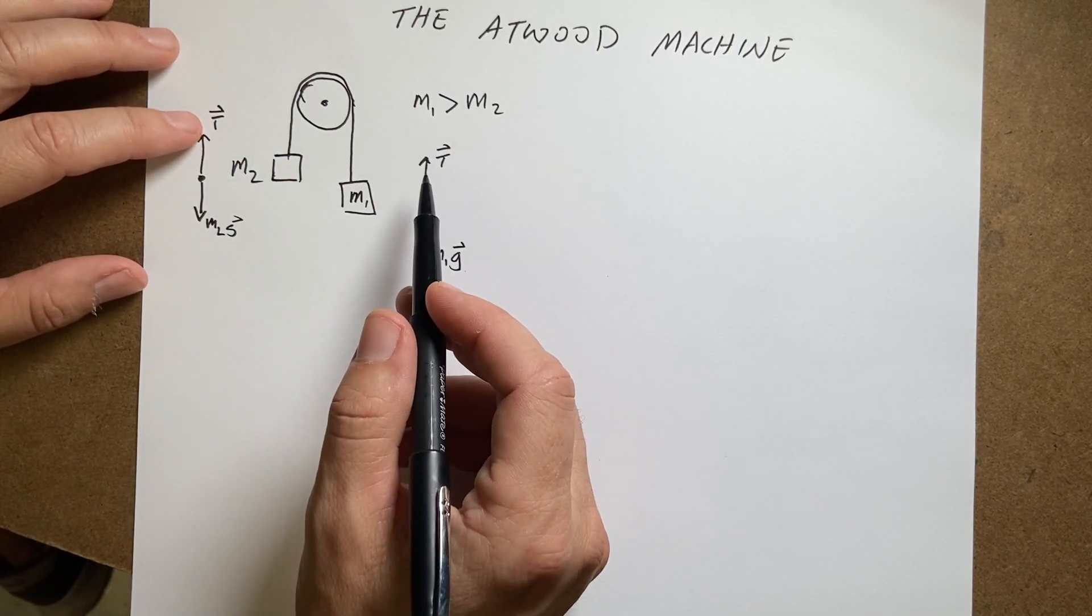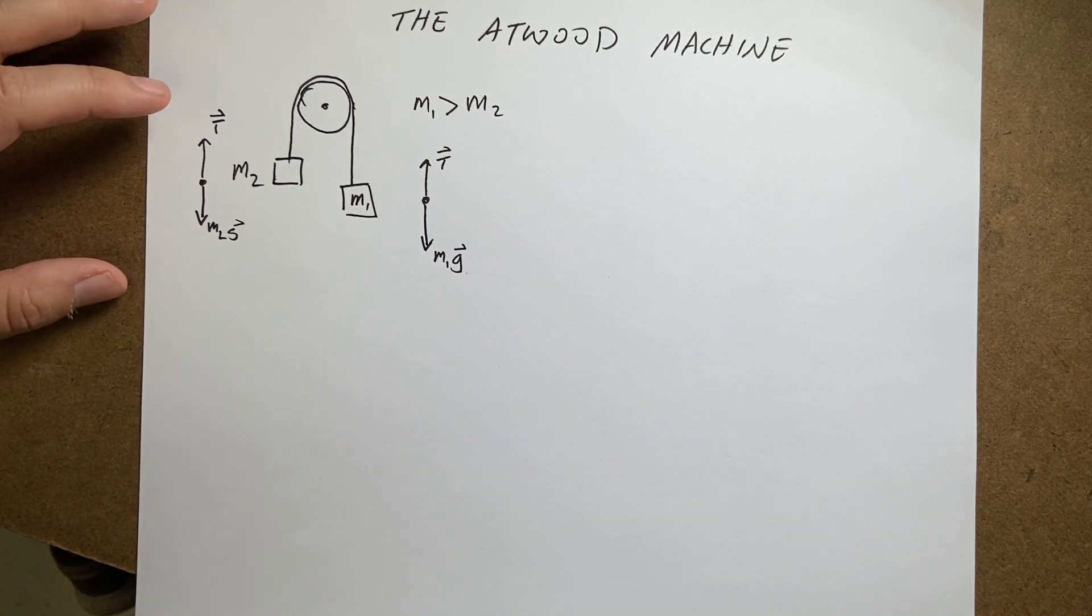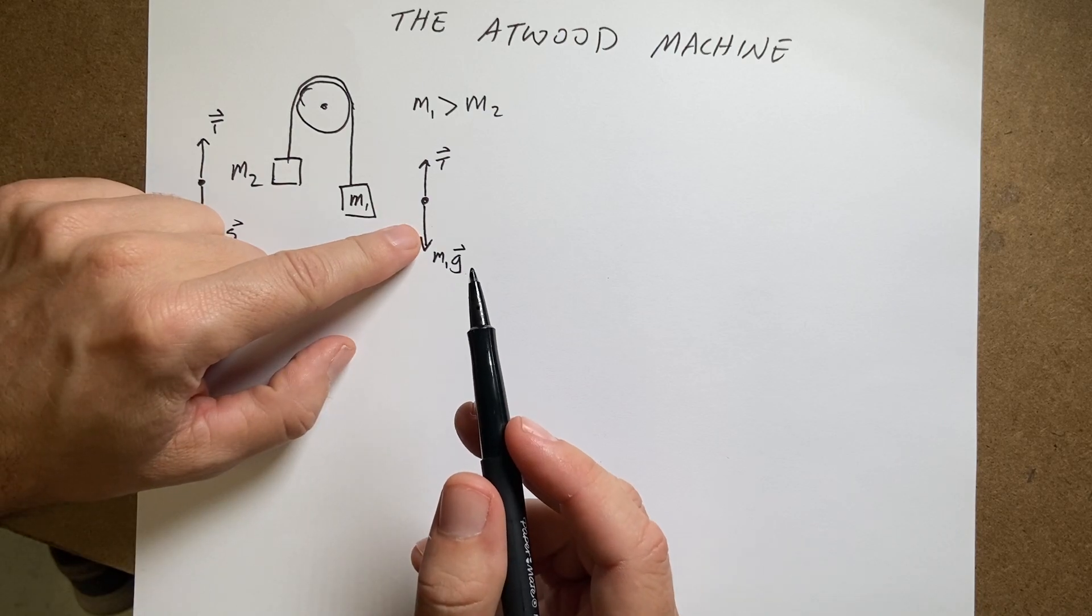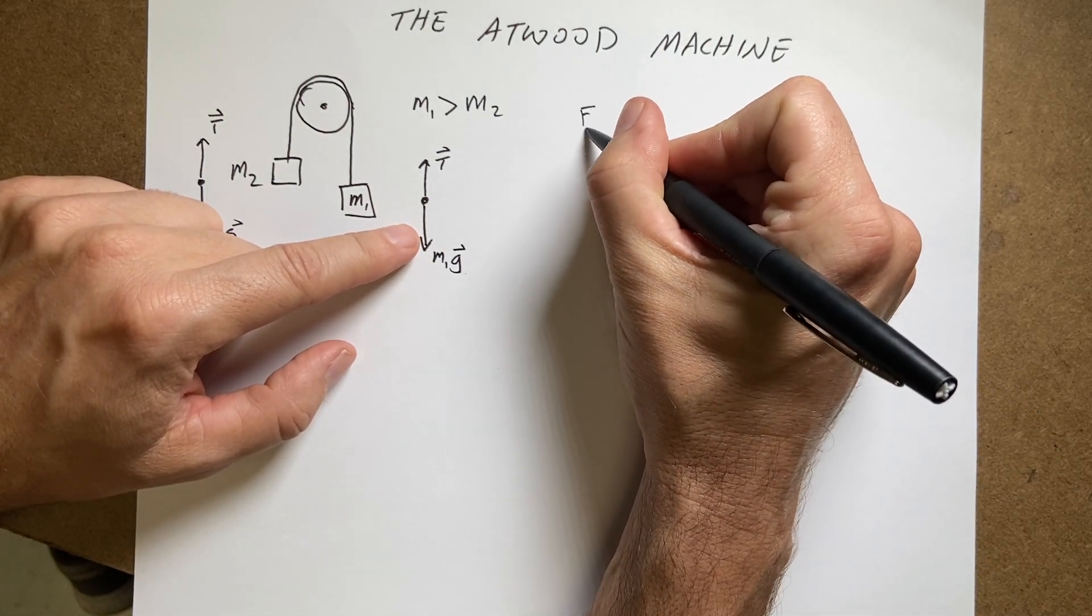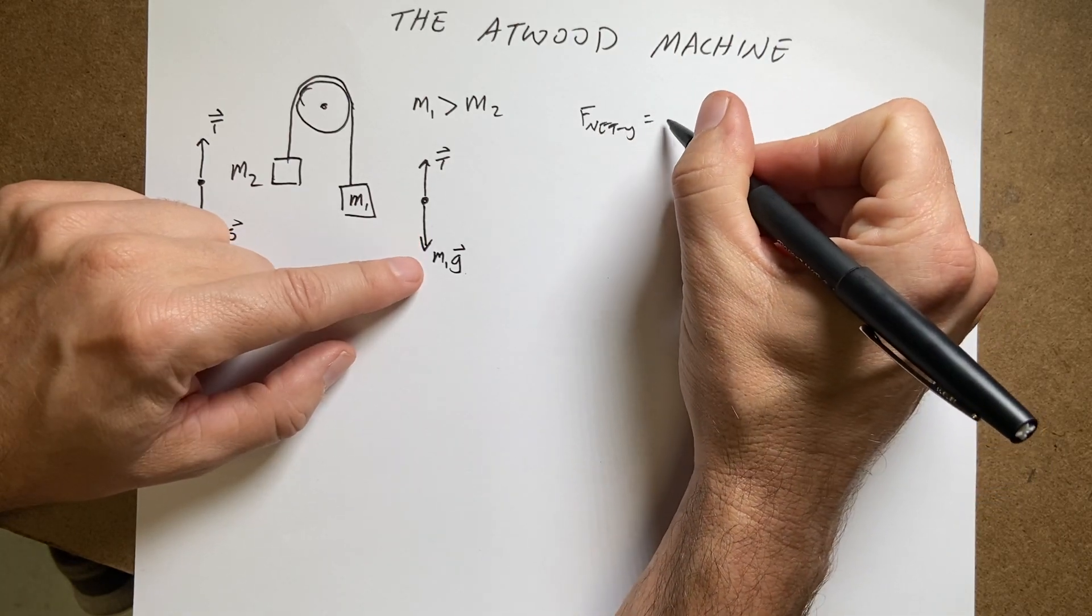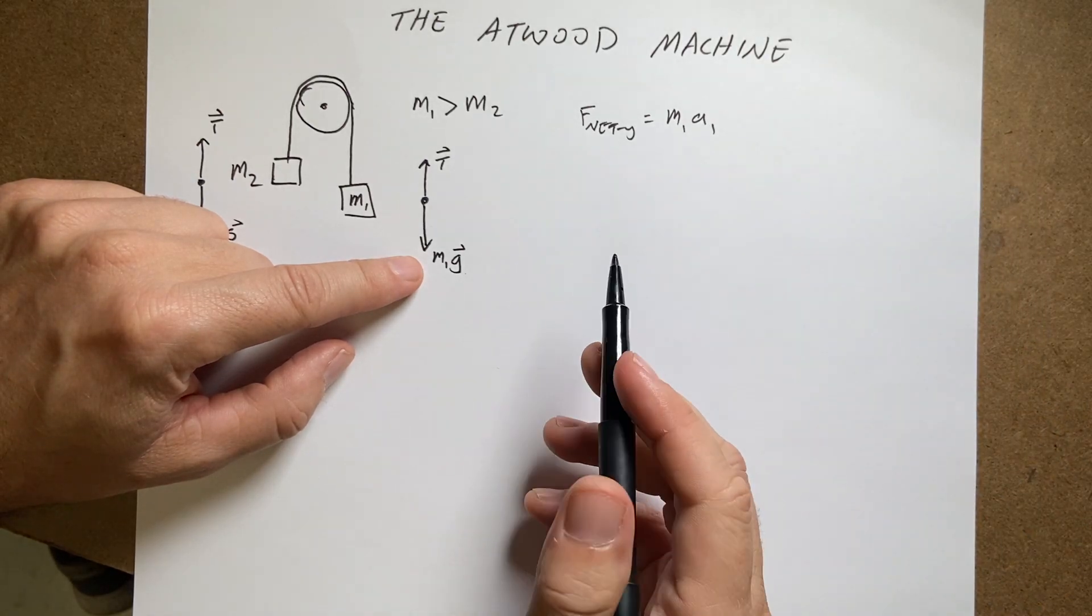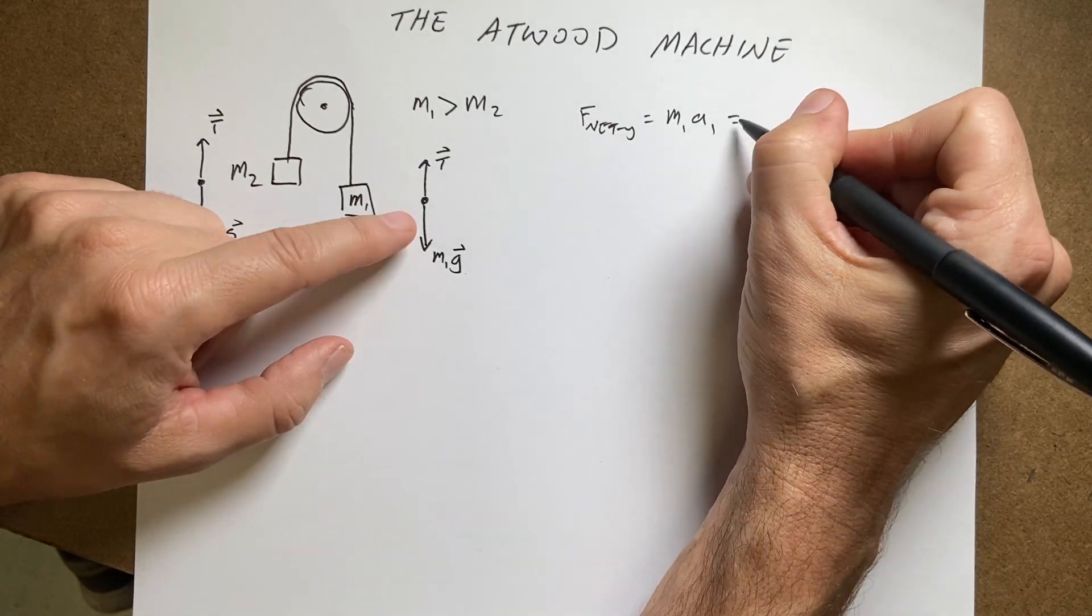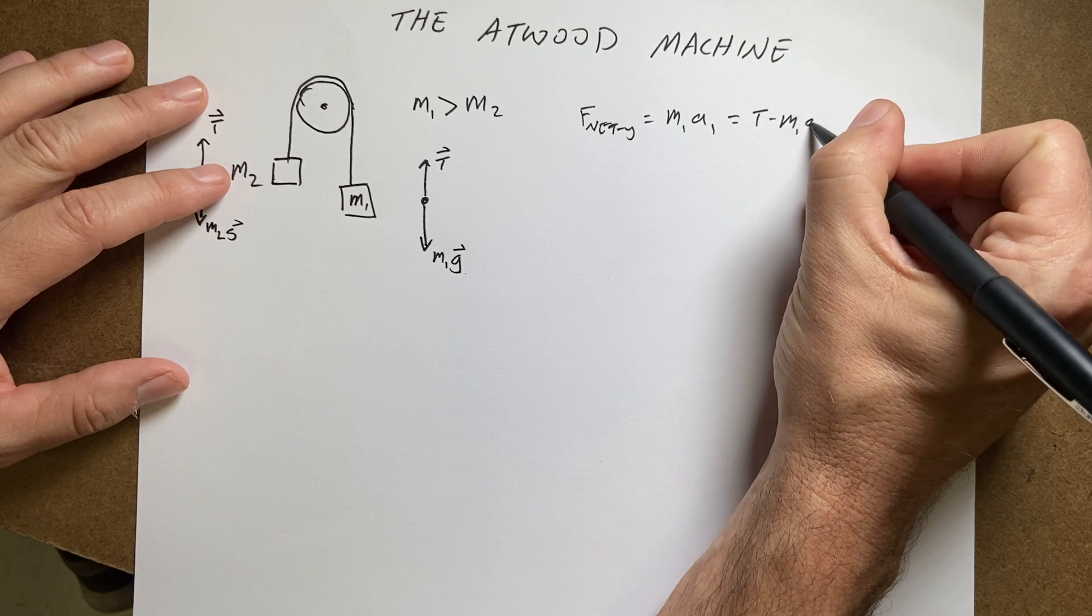So those two have the same magnitude but different directions. I've labeled them the same, which is a bad idea, but it's going to work. So now I can use Newton's second law. So if I write Newton's second law for this one, it's going to be in the y direction, F net y equals m1 a1. This is a1y, the acceleration in the y direction. And what forces are in the y direction? We'll have a positive T minus m1 g.